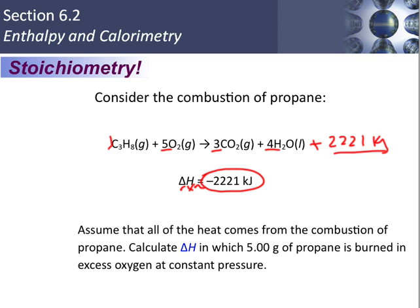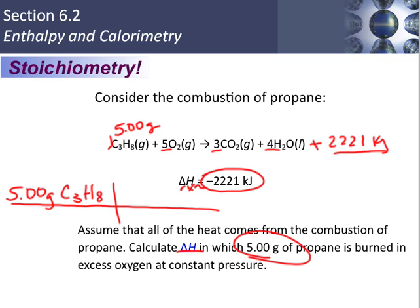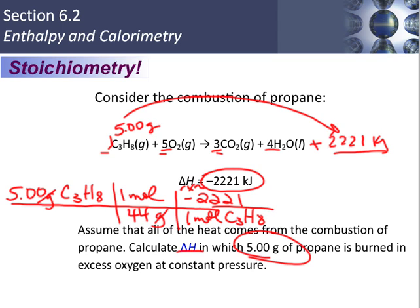So we're going to do stoichiometry treating this just like any other reactant or product. So we start with the given. It says assuming that all the heat comes from the combustion, calculate delta H in which five grams of propane is burned in excess oxygen. So we're going to start with our given. This is all we have, five grams of propane. So let's start a stoichiometry problem. What do I need next? Got to convert to moles of propane. So for every one mole we have 44-ish grams. So my grams cancel. Now I know how many moles of propane. Now what I do is just treat it stoichiometrically related to all of these coefficients. So for every one mole of C3H8, I have 2221 kilojoules.